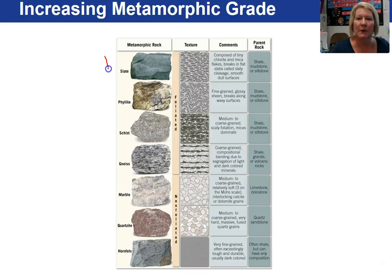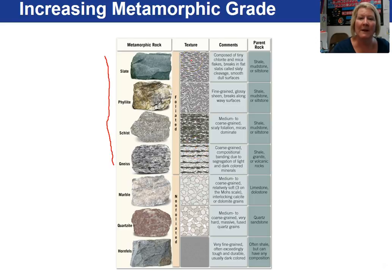Here's a summary table showing our slate, phyllite, schist, and gneiss — these are our foliated rocks. Notice a picture of the texture, which is quite handy. We go from fine-grained flat layers in slate, to fine-grained wavy in the phyllite, to coarse-grained in the schist, to actual banding in the gneiss.